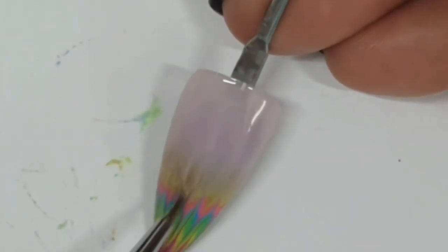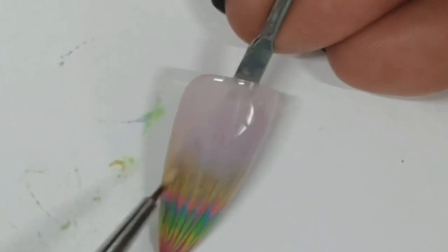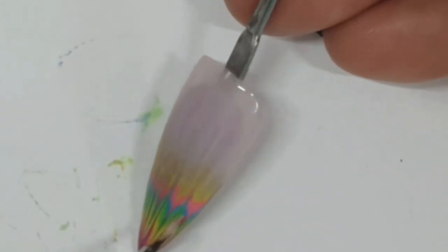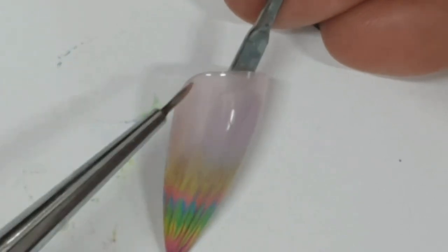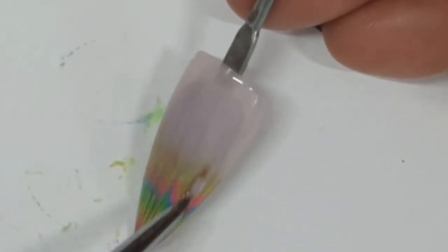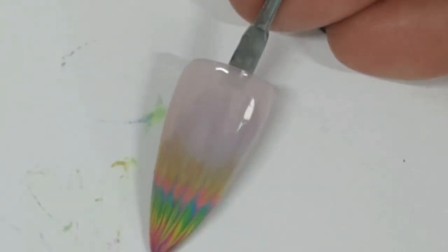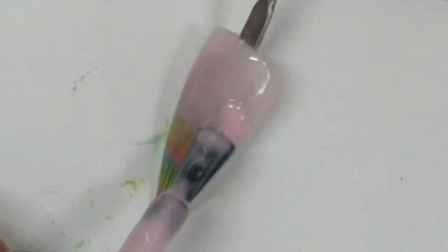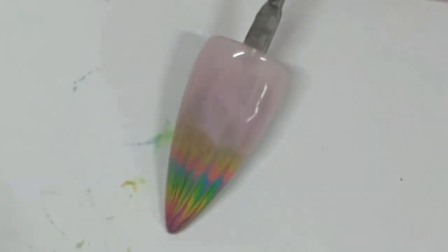And this is another coat of sheer pink, and I'm just pulling it down. You don't have to be perfect with this, because it's sheer, so it's not going to leave, like, really opaque line marks. Line marks. Yeah. So, that had a cure, and I'm doing a second coat.